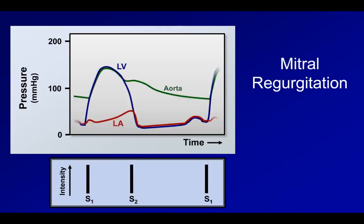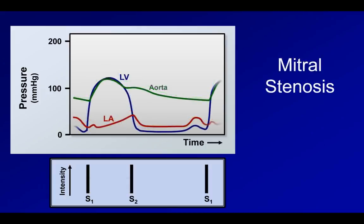Next we have mitral regurgitation. [audio clip] The pressure gradient between the left ventricle and left atrium remains relatively constant throughout systole, resulting in a uniform or holosystolic shape. [audio clip] And here is mitral stenosis. [audio clip] Here there is a relatively constant pressure gradient between the left atrium and left ventricle, with the exception of a pre-systolic accentuation which is the consequence of the atrial kick.